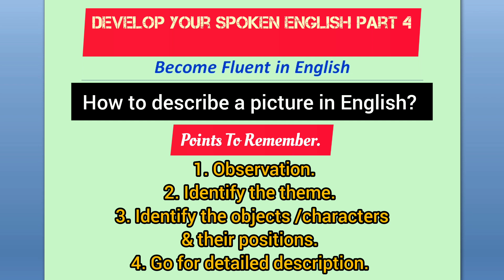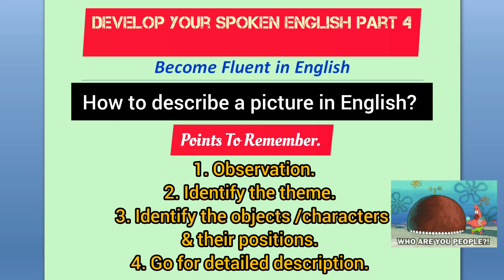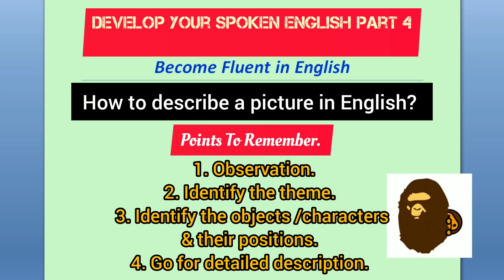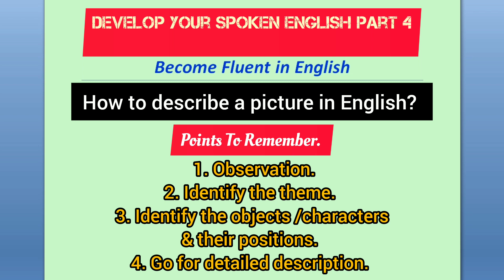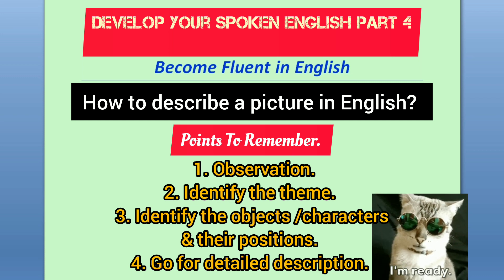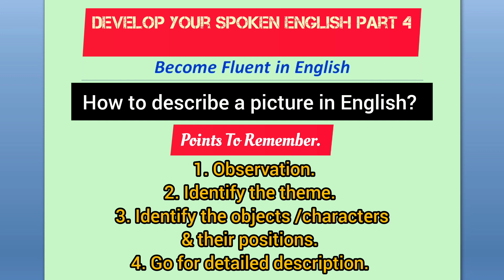Once you identify the theme, you need to identify the objects in the picture, the characters and their positions — especially where they are located. Once you are done with that, you are more or less ready to get started and go ahead with a detailed description. Follow these four important points and you will be able to describe any picture.